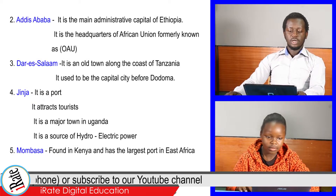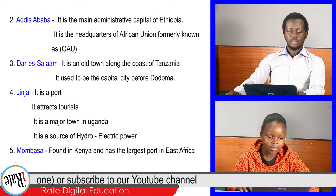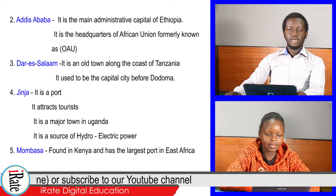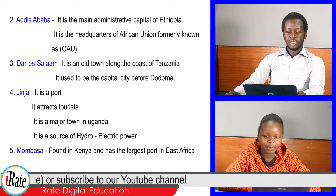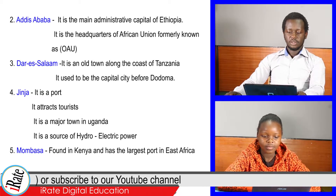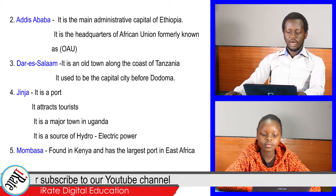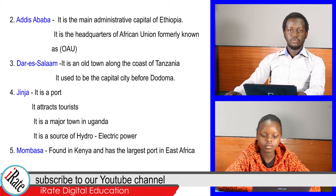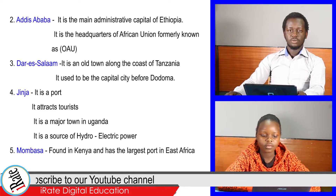2. Addis Ababa. It is the main administrative capital of Ethiopia. It is the headquarters of the African Union, formerly known as OAU.